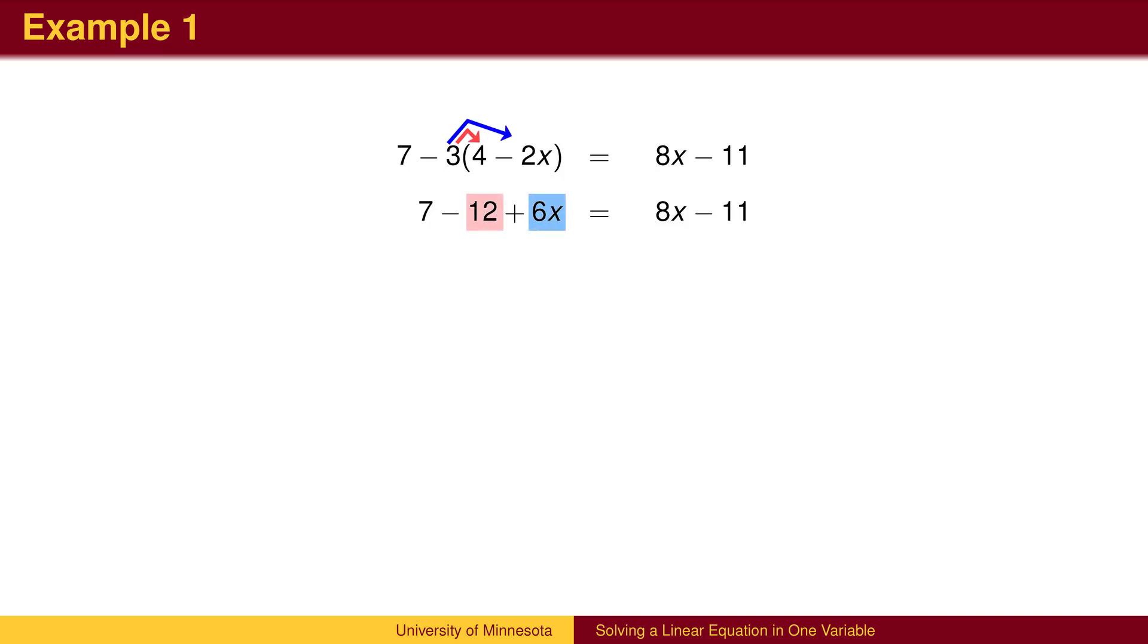The first step is to use the distributive property to expand the parts of the expression in the parentheses. Here, we distribute the negative 3.